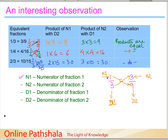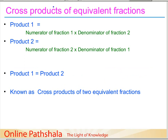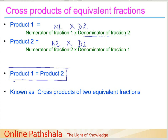What we have observed is that when you multiply the numerator of fraction 1 with the denominator of fraction 2, and the denominator of fraction 1 with the numerator of fraction 2, the products are equal. This is an important property of equivalent fractions, and it is also called the cross product. Product 1 is N1 × D2, product 2 is N2 × D1, and product 1 equals product 2.